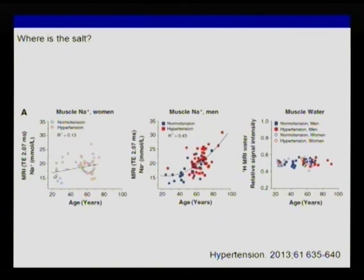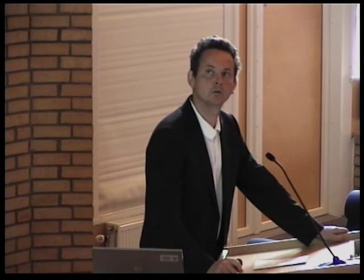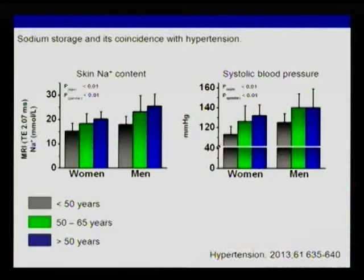This sodium storage really resembles essential hypertension. We know essential hypertension occurs with age, and here blood pressure and sodium storage both increase with age in this cohort. We know that females do everything better — their blood pressure is better — and we found this gender difference again in skin sodium content. The only thing I find extremely unfair is that women live longer. That's why I'm a fan of gender research — we need to understand why men die earlier.